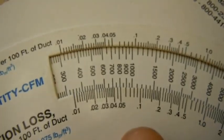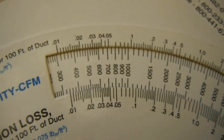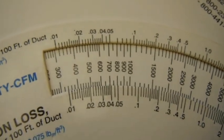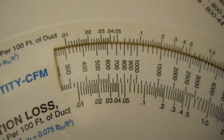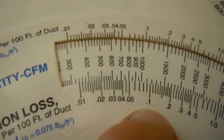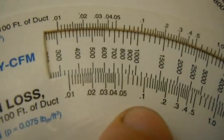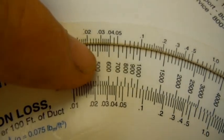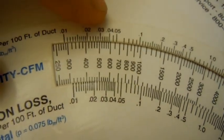When calculating the supply duct, still always go with manufacturer specifications. Rule of thumb is you can go with a .1 for the friction loss and still 400 CFMs per ton.